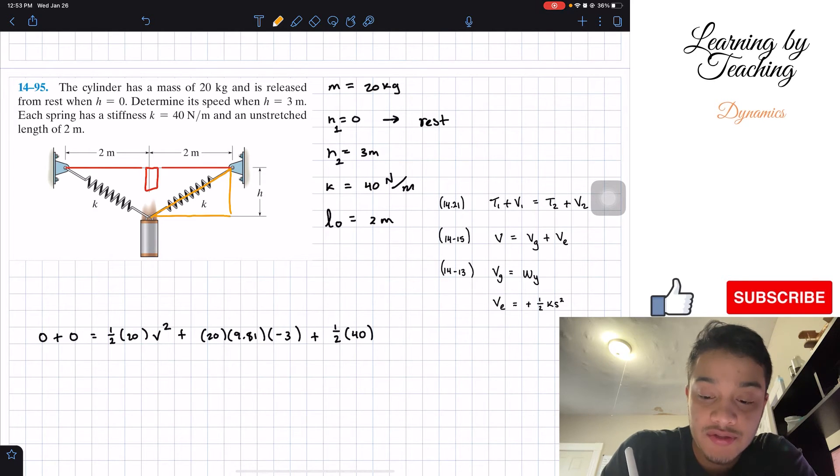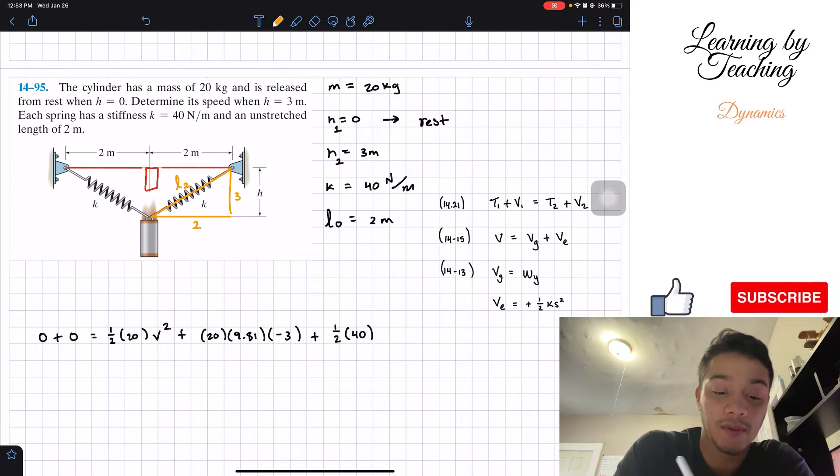We know that this h is three, that this adjacent is two. Therefore, we need to find this L2. I'm going to call it L2.